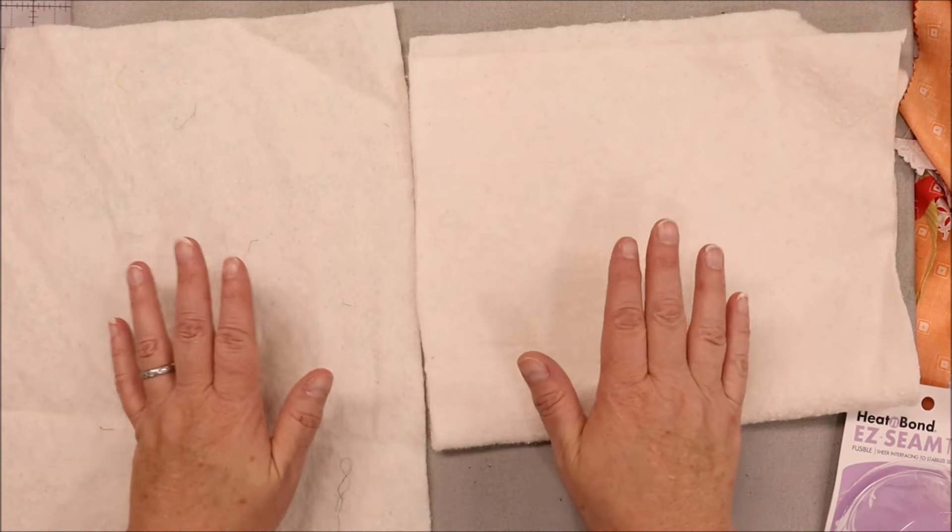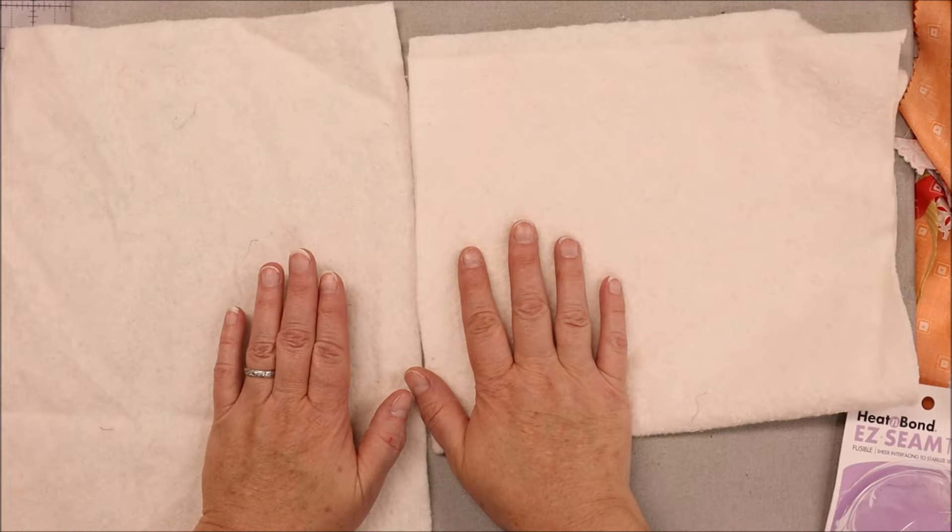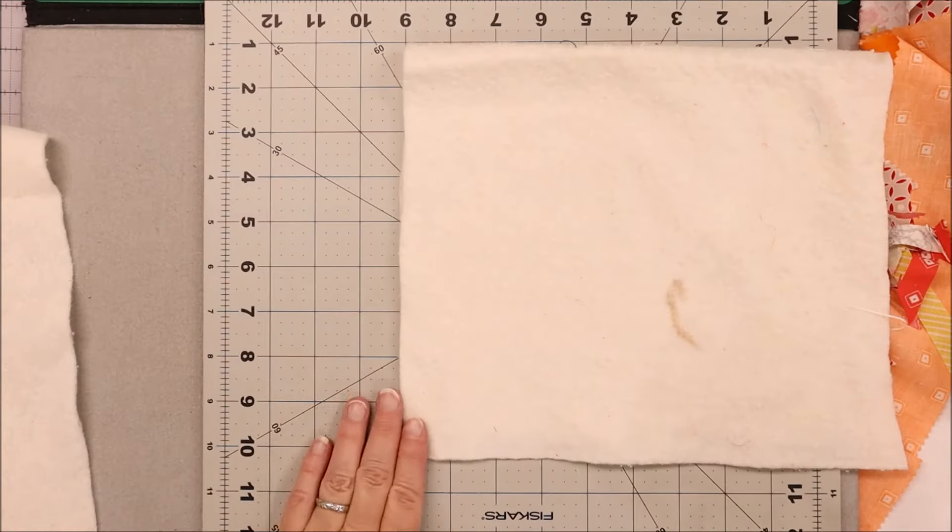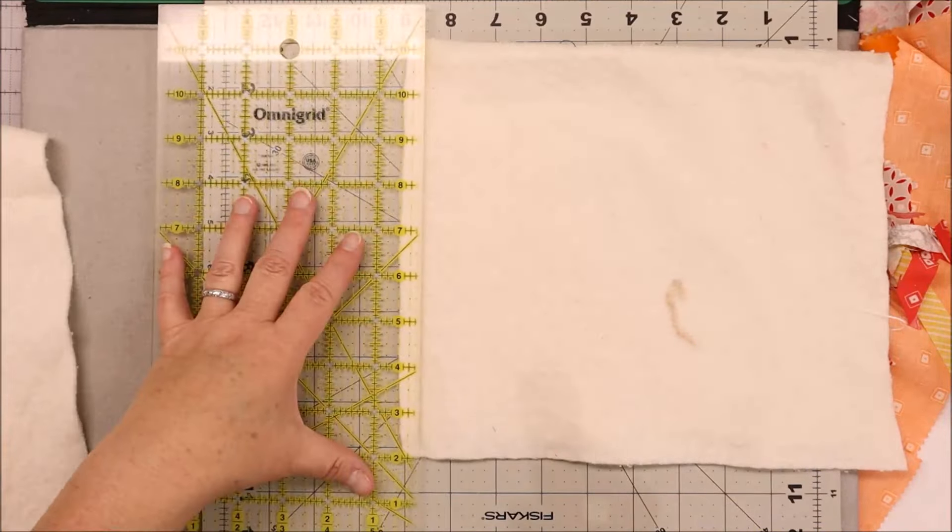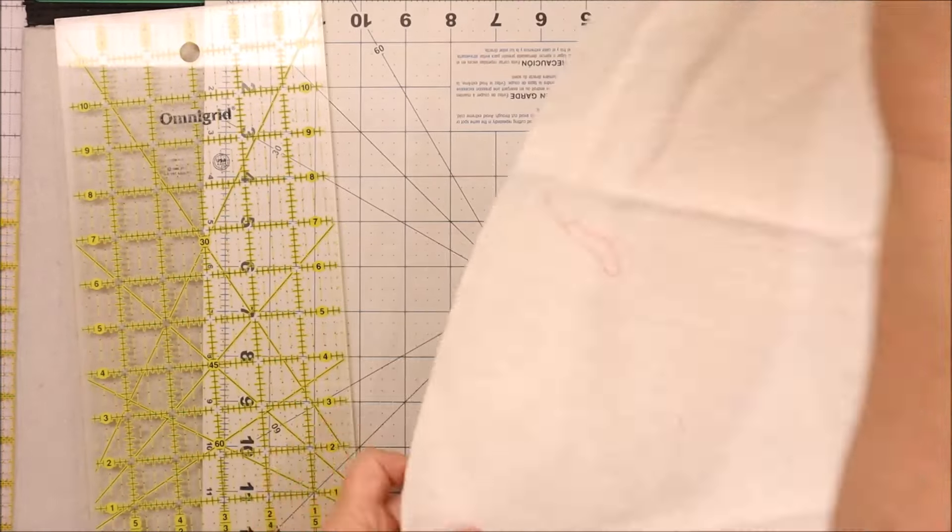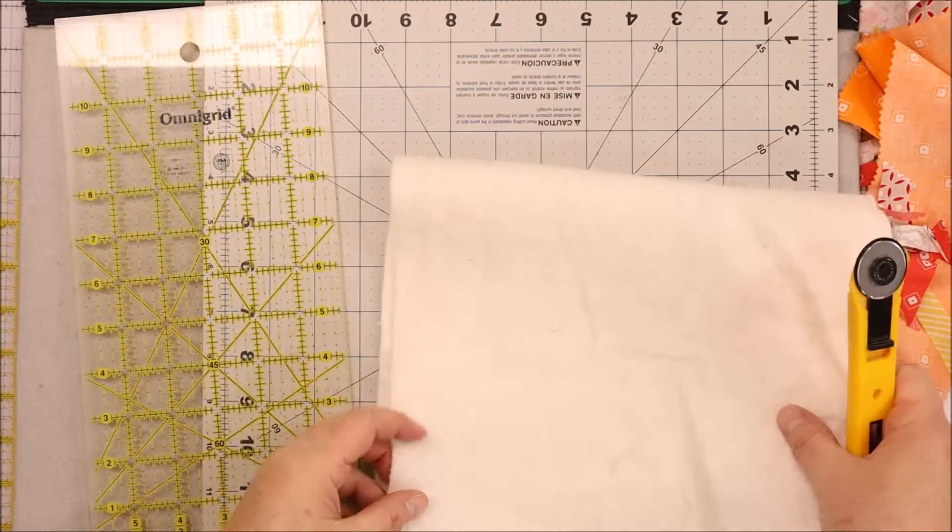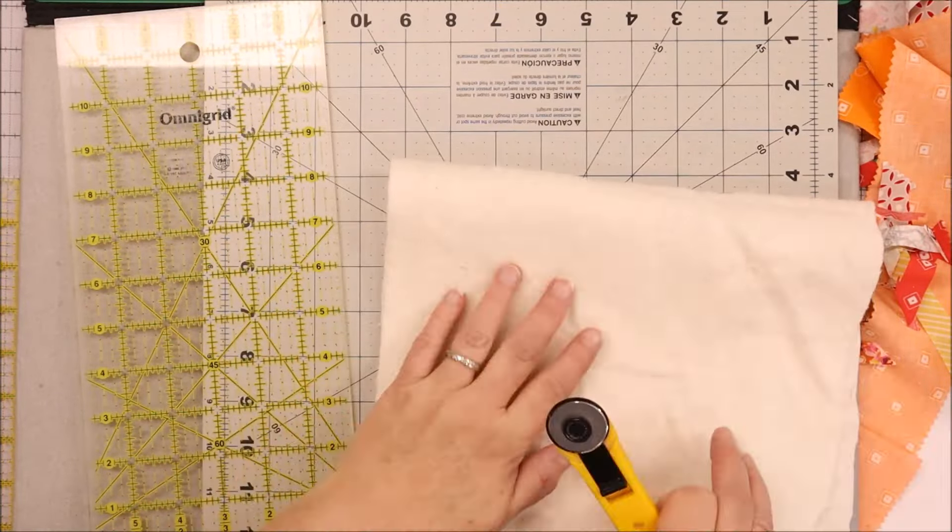So today we are going to put together these little pieces so you can use them again. I have my two strips and what you're going to do is feel both sides of your batting and place same sides up. So if it's the rough side, put this on the top. If it's the smooth side, put this on the top. Just make sure that they are the same sides.